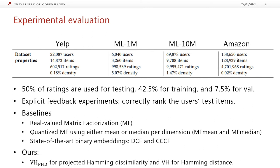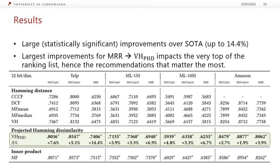As baselines, we use a real-valued matrix factorization, MF, which has recently been shown to be very competitive with neural models. For binary methods, we have a quantized MF where we use either the mean or median as the splitting point per dimension, called MF-mean and MF-median. Most importantly, we have the two state-of-the-art binary embedding approaches, DCF and CCCF. Our approaches are denoted VHPHD for our variational hashing framework using the projected Hamming dissimilarity, and VH when the Hamming distance is used.